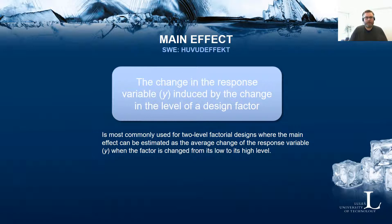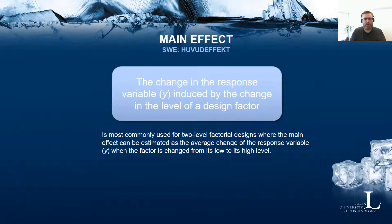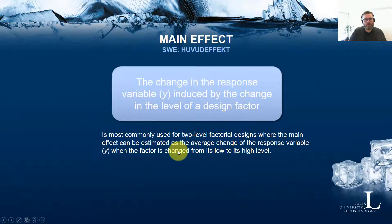The main effect, which is most commonly used for two-level factorial designs, can be defined as the change in response variable Y which is induced by the change in the level of a design factor. In two-level factorial designs, we can have the main effect estimated as the average change of the response variable Y when the factor is changed from its low to its high level.